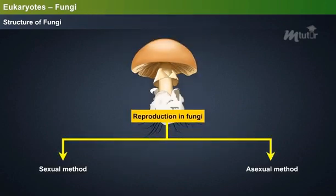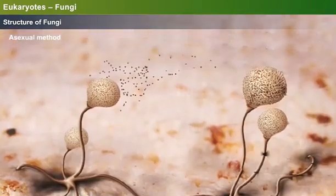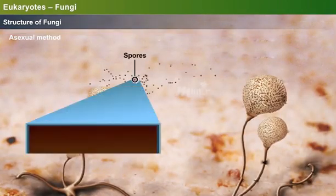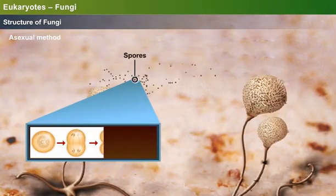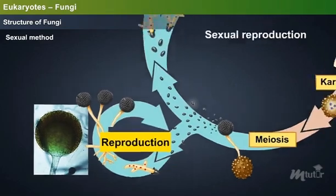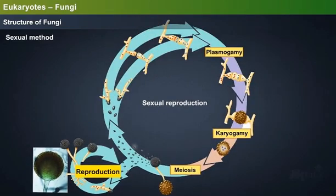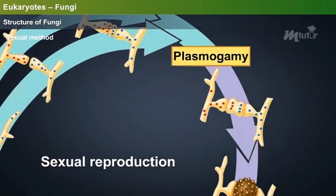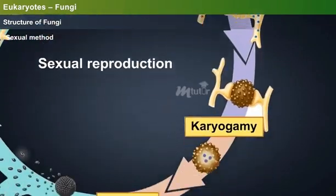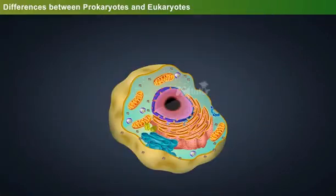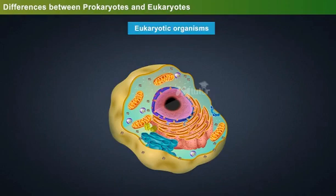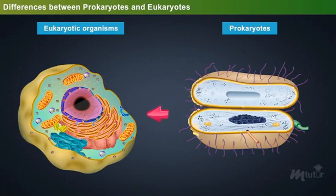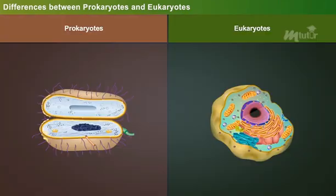Reproduction in fungi can occur by sexual or asexual method. In the asexual method, spores are produced by the mitotic division of the nuclear cell. Whereas in the sexual method, reproduction occurs through the fusion of gametes, followed by plasmogamy, karyogamy and meiosis. Though eukaryotic organisms evolved from prokaryotes, they differ in their structural and functional organization.